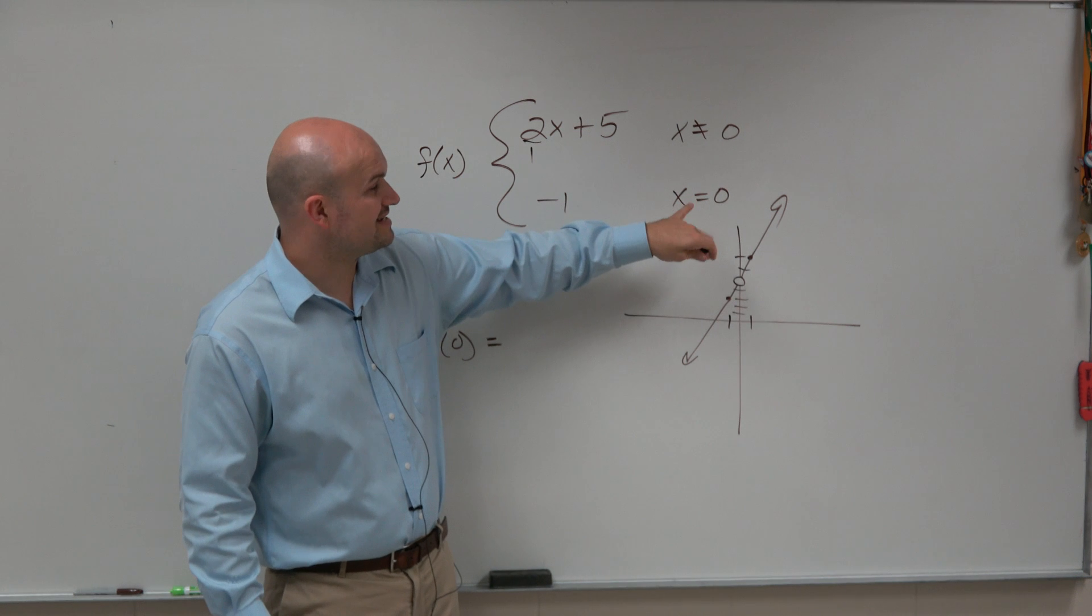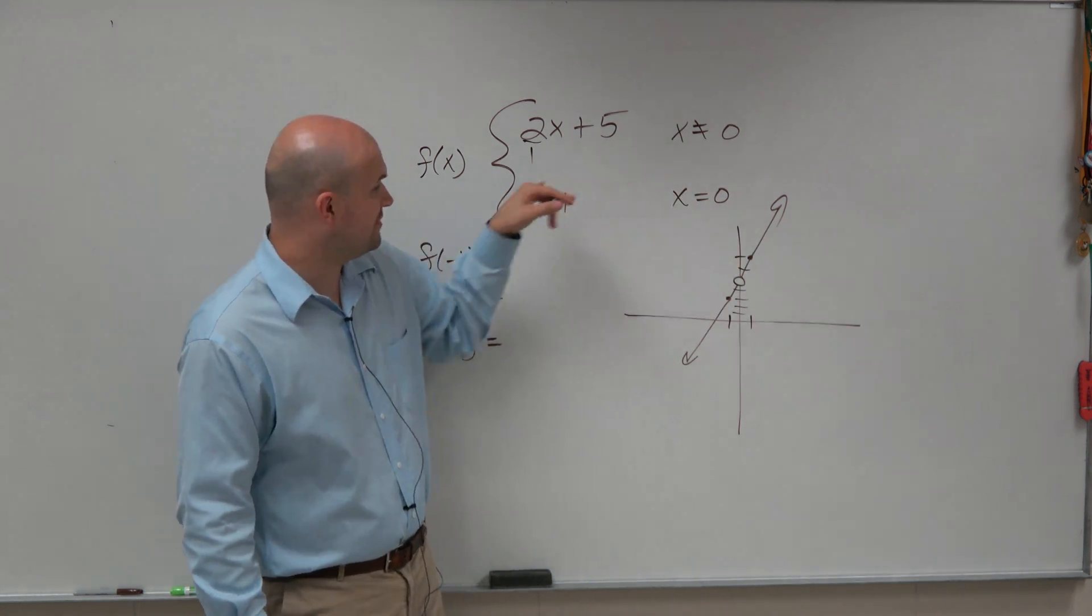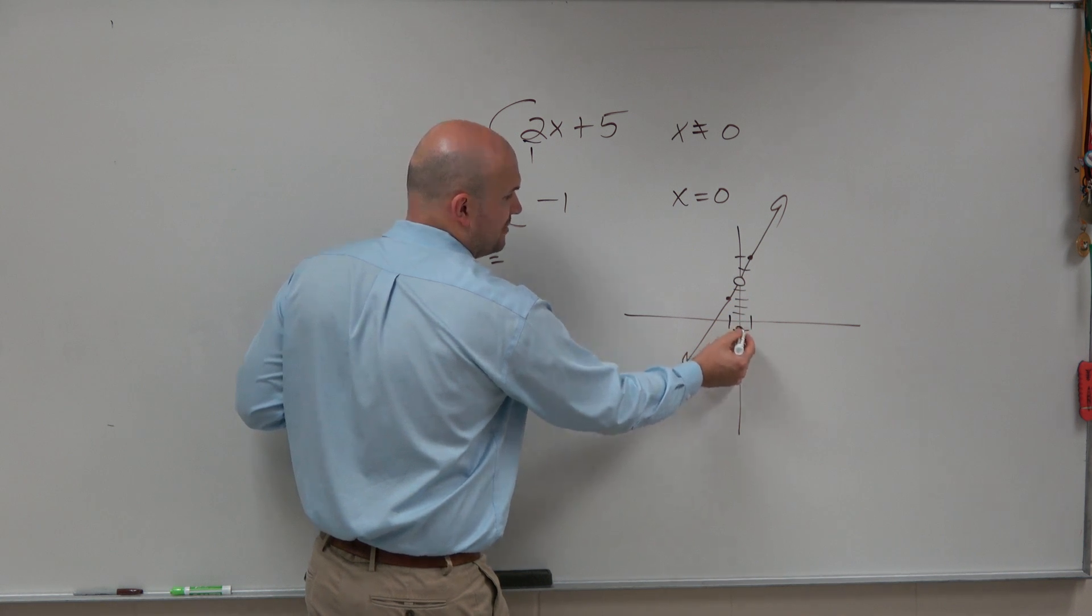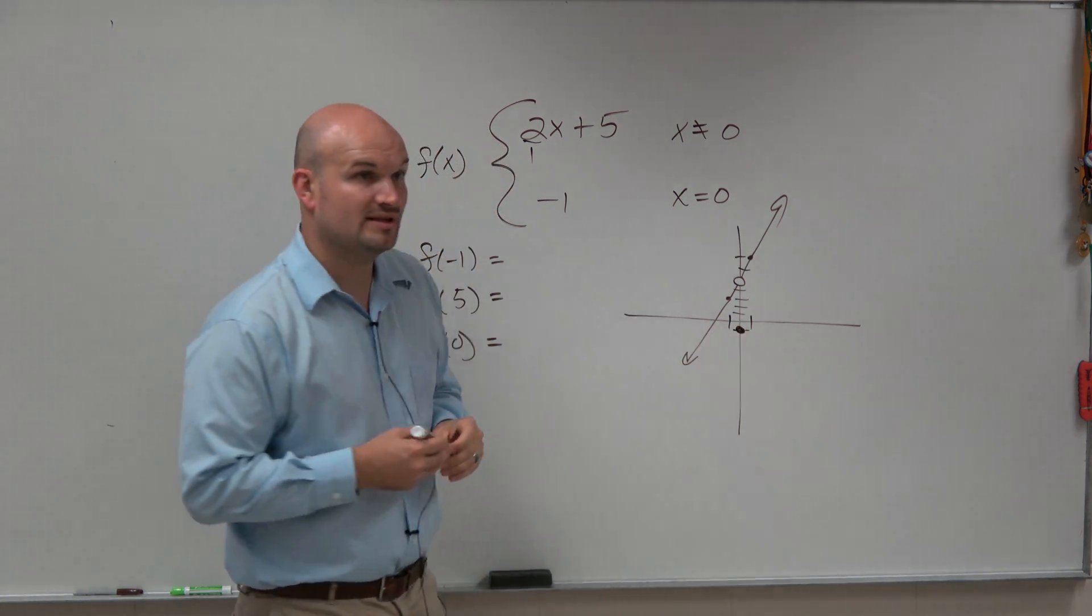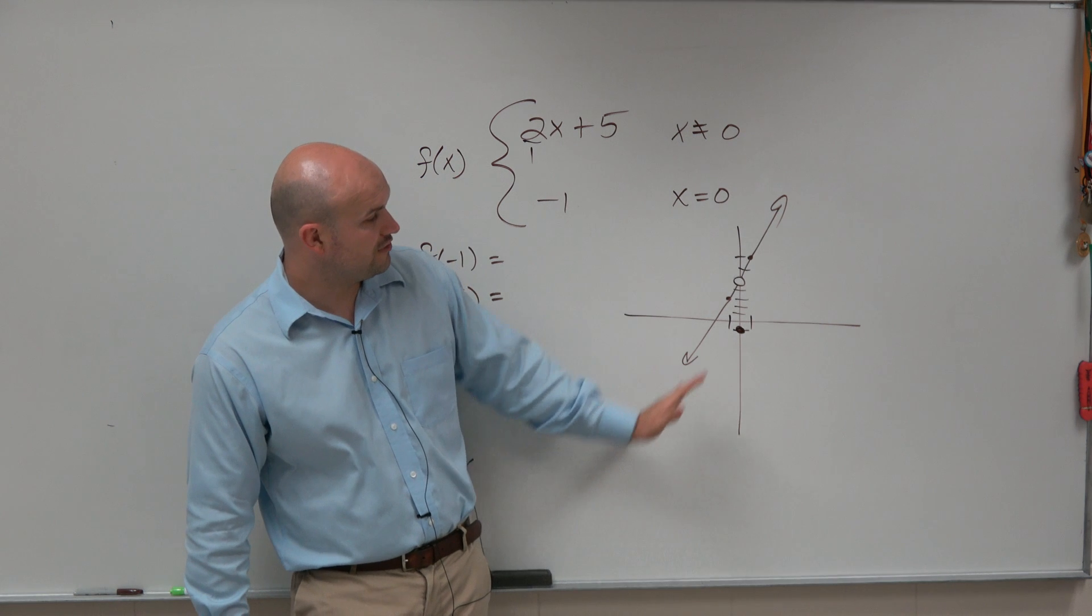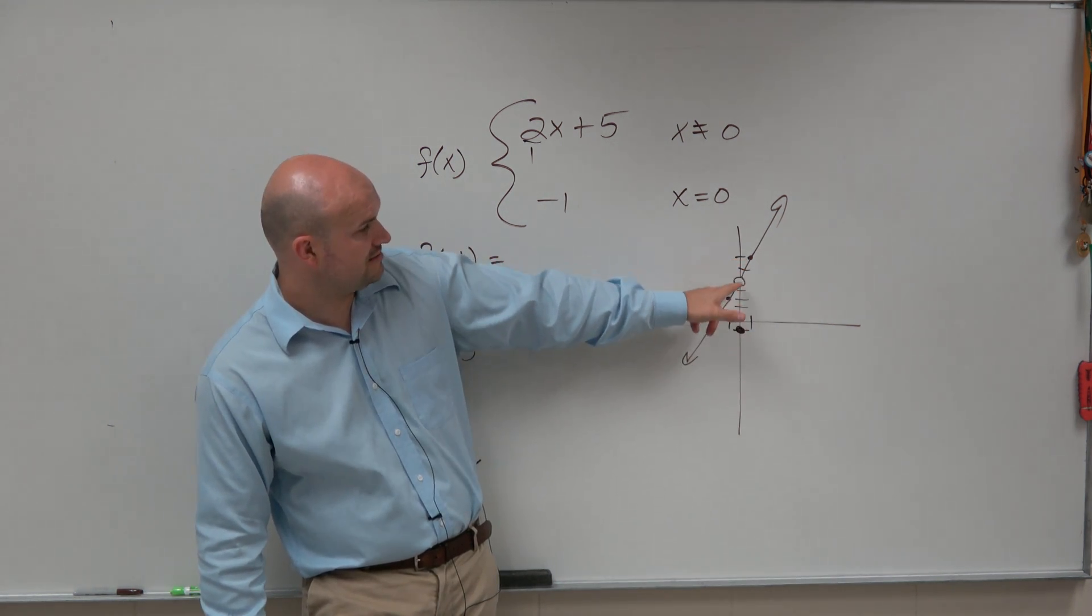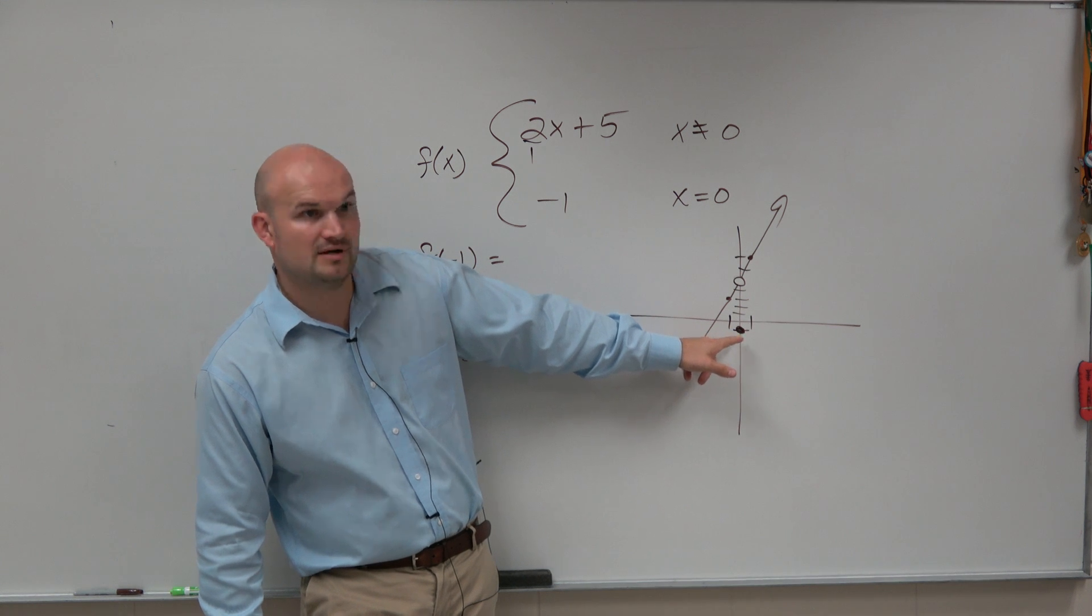Then it says at x equals 0, we want the function to equal negative 1. So that's our second constraint. So we go down to negative 1 and we put a nice little dot. So what this is is a function with a hole, but then its value at 0 is not up there. It's all the way down there at negative 1.